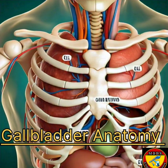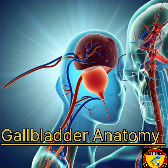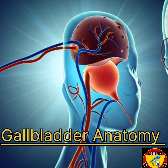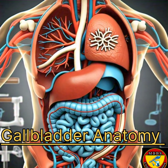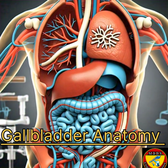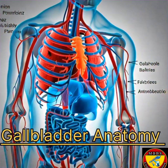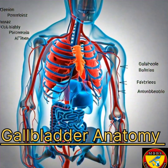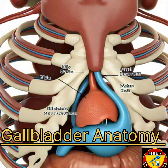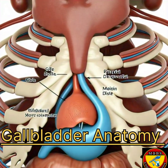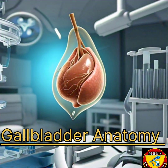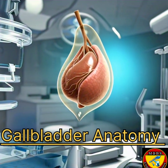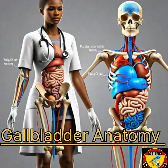It lies beneath the liver, nestled in a bed of fatty tissue, and is closely related to the following structures: the liver, to which the gallbladder is attached by connective tissue; the duodenum, the first part of the small intestine, which receives bile from the gallbladder; and the portal vein, a major blood vessel that carries blood from the digestive organs to the liver.